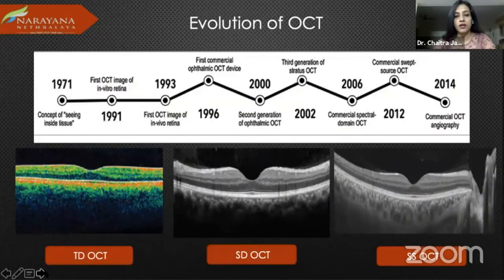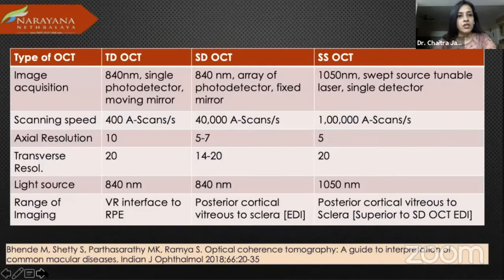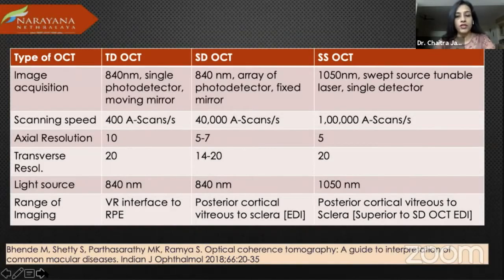Going on to the evolution, many seniors in this group have seen OCT evolve right from the stratus up to swept source. This shows the different time domain to the swept source that we have seen over the years, and it has only improved our experience with better resolution and better detailing. A table compares the three different types — the light source is different and the range of imaging is also different, up to the enhanced depth imaging that gives us a lot of detail about the choroid as well, which has become an important addition to our armamentarium.